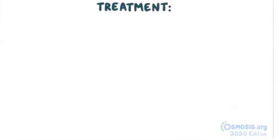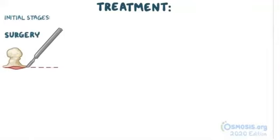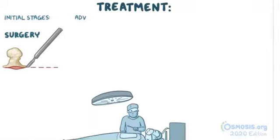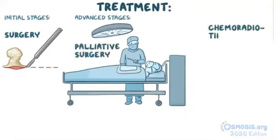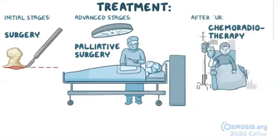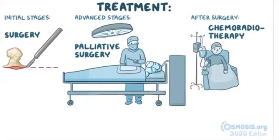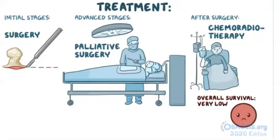Treatment depends on the stage. For initial stages, surgery can be performed to treat the cancer. For advanced stages, surgery can only relieve the pain, called palliative surgery. Chemoradiotherapy after surgery is used to increase the chance of survival. Unfortunately, the overall survival rate is very low because gastric cancer is usually diagnosed at very advanced stages.